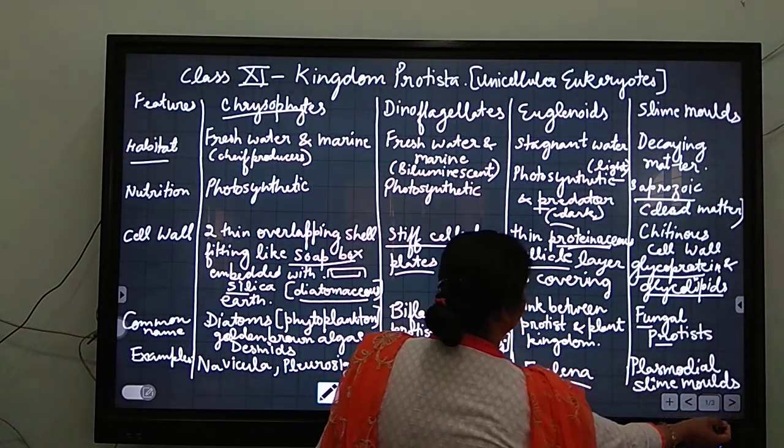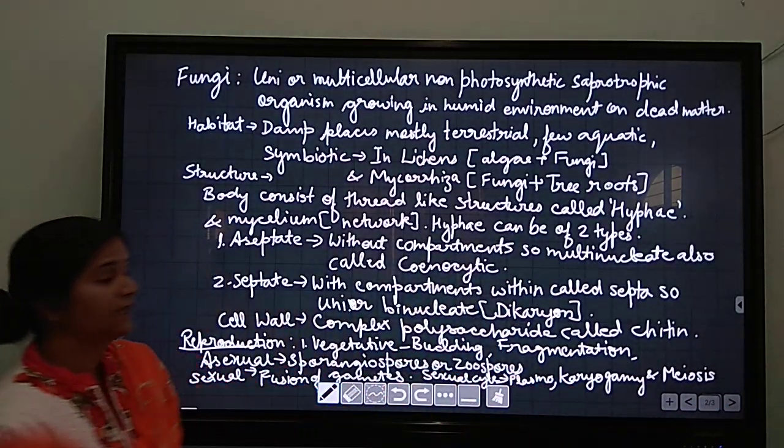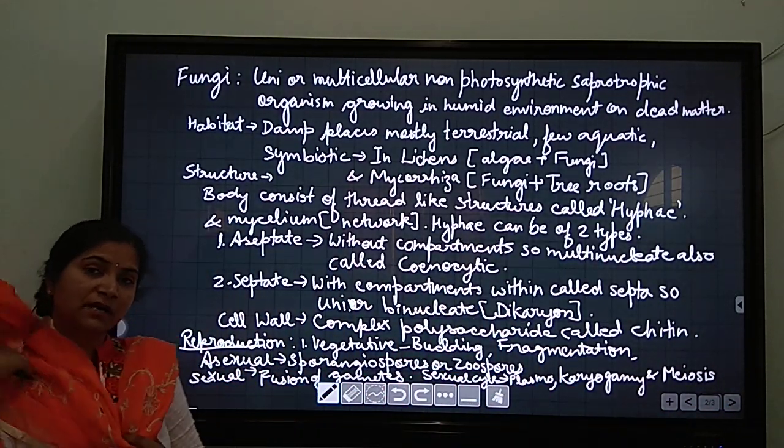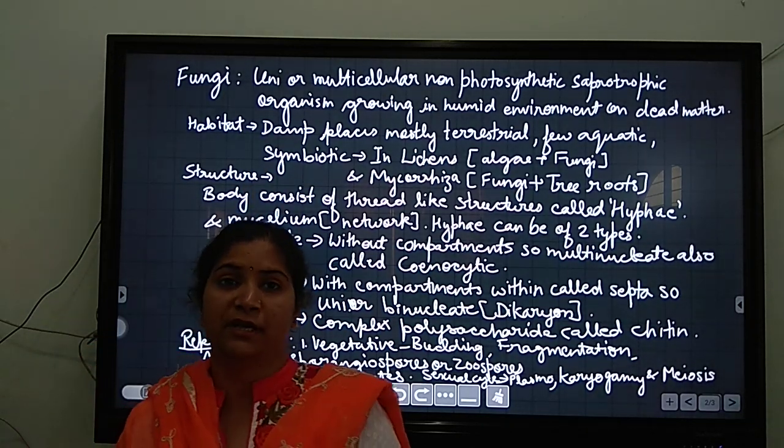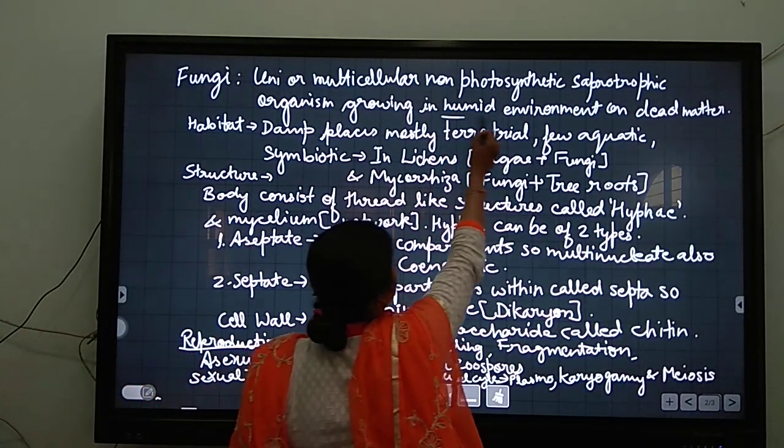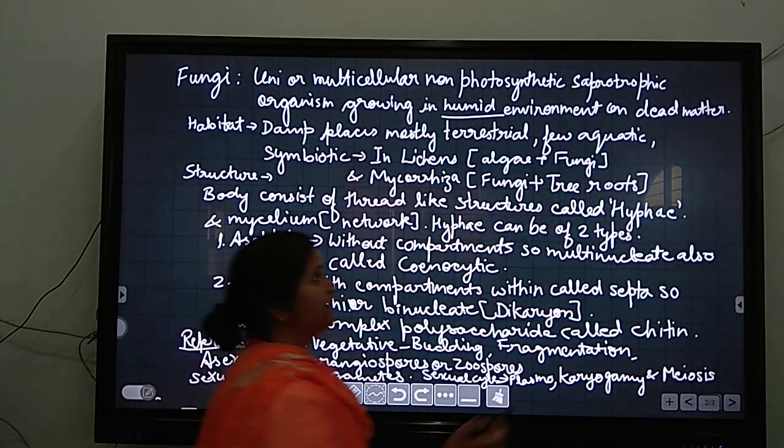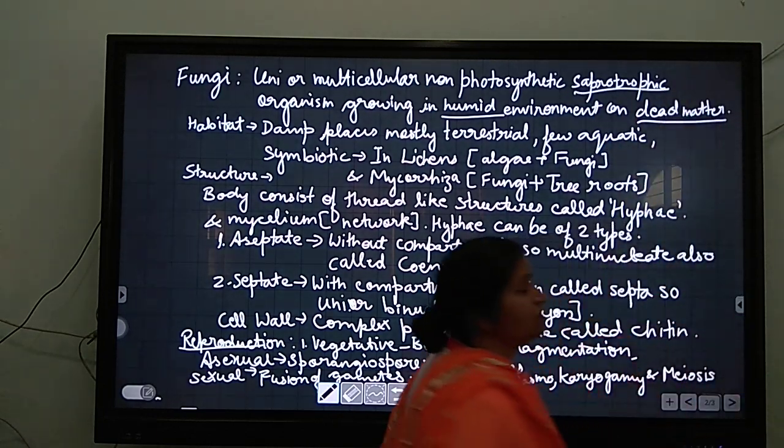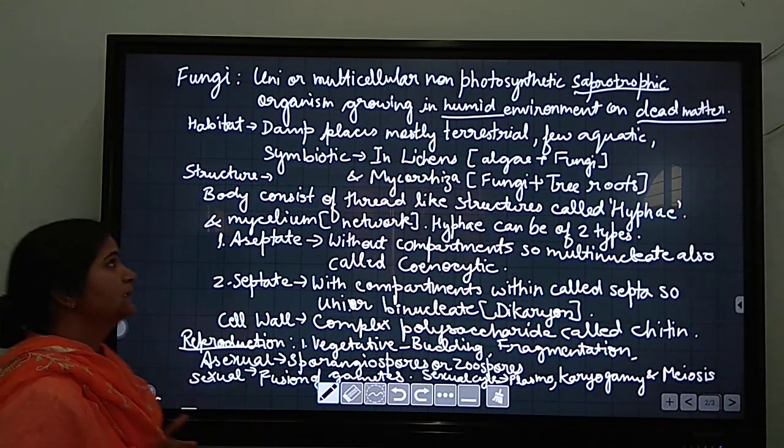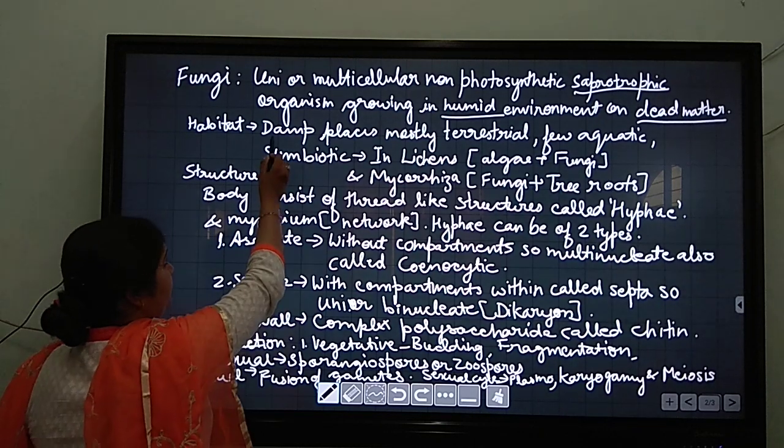Now coming to the next, we will now discuss about the fungi. What are the general features of fungi? Fungi are unicellular or multicellular non-photosynthetic organisms and they are growing in humid environment and on dead matter. Dead matter means something which derives nutrition from dead matter is saprotrophic.